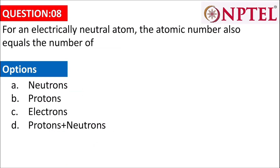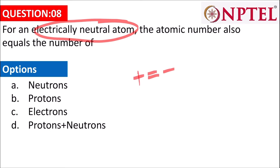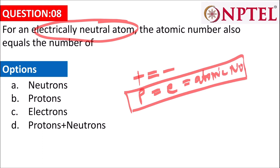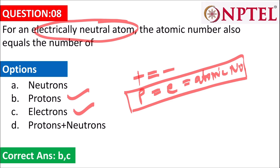The next question asks about an electrically neutral atom. Electrically neutral means positive charge equals negative charge. The positive charge is from protons and negative charge from electrons, so the number of electrons equals the atomic number. The answer should be B or C, both.